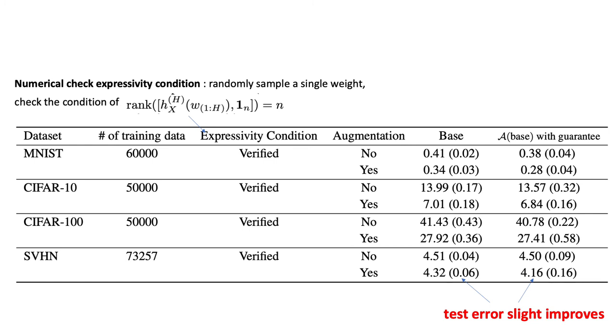Empirically, we are able to show that for the following four datasets—MNIST, CIFAR-10, CIFAR-100, and SVHN—we are able to check its expressivity condition numerically.